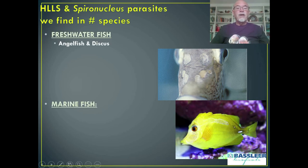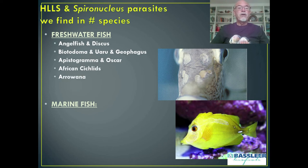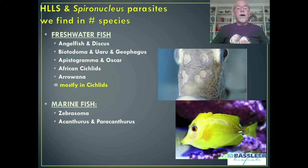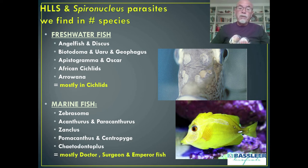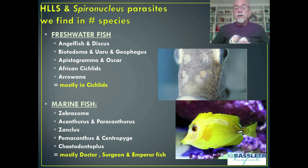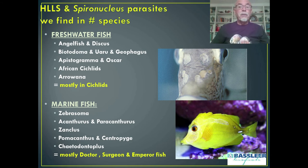We find spironucleus parasites in many different species: geophagus, angelfish, discus, biotodoma, apistogramma, oscar, cichlids, African cichlids, arowana — mostly in cichlids. In marine fish: zebrasoma, acanthurus, paracanthurus, zanclus, pomacanthus, centropyge, chaetodontoplus — mostly doctor, surgeon, and emperor fish. Neon tetras can rarely be infected but they die before showing holes, so we particularly find head and lateral line syndrome in cichlids and surgeon/doctor fish where the lateral line erosion develops.